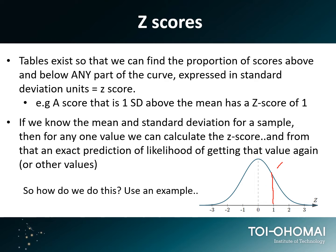Knowing that relationship, we can use something called a z-score table in order to figure out the probability of getting any value. So if we have a value that fell one standard deviation away from the mean — for example, in our IQ test, if somebody got 115 and 15 was our standard deviation — they would have a z-score of 1, z equals 1.